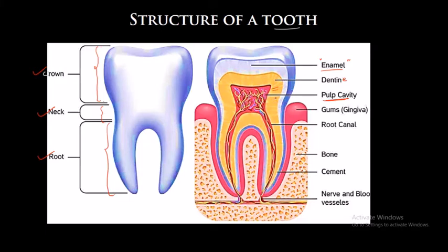In the pulp cavity region there are nerves and blood vessels. The teeth are surrounded by the gums. As we go into the root part of the tooth, the thin section running all the way from top to bottom is known as the root canal. The tooth is embedded inside the jaw bone, and there is a material called cement which helps to adhere the bone and the tooth, fixing the tooth in its proper position.